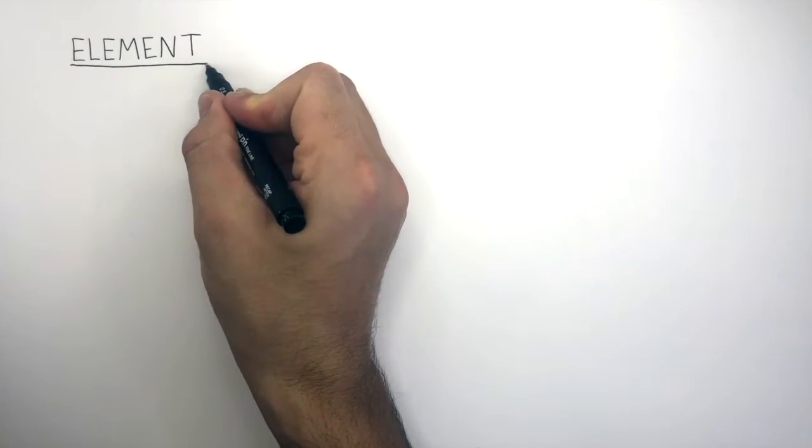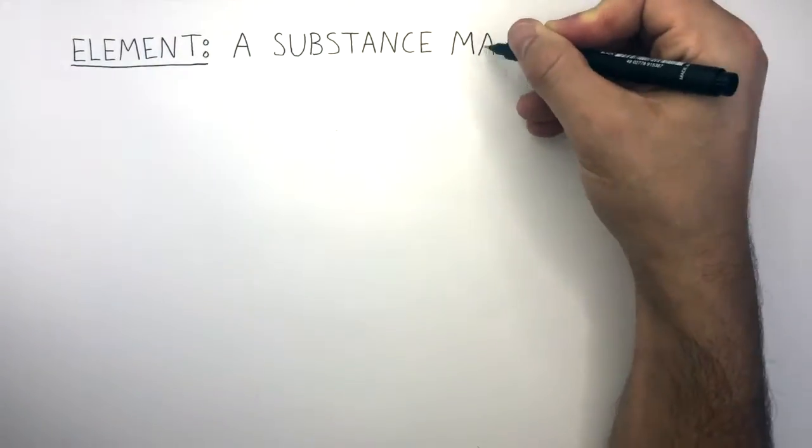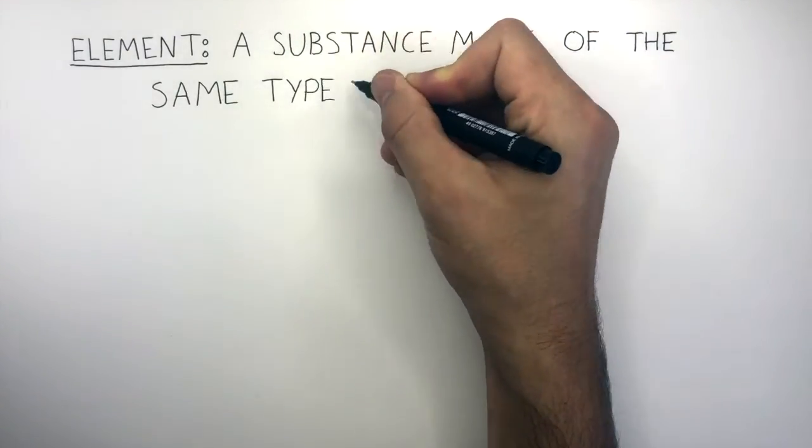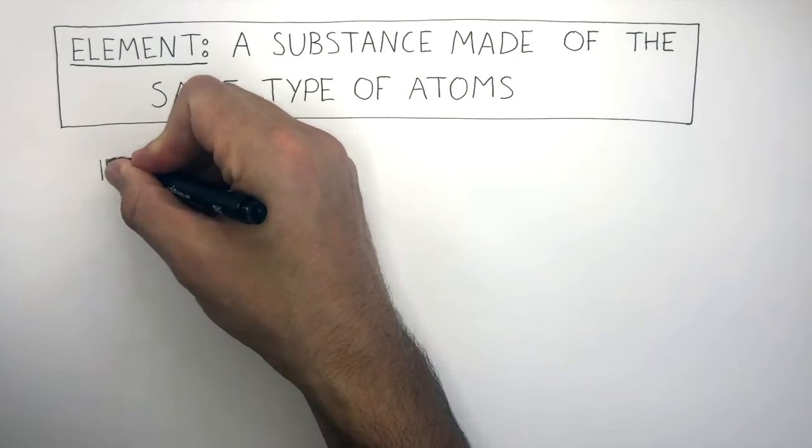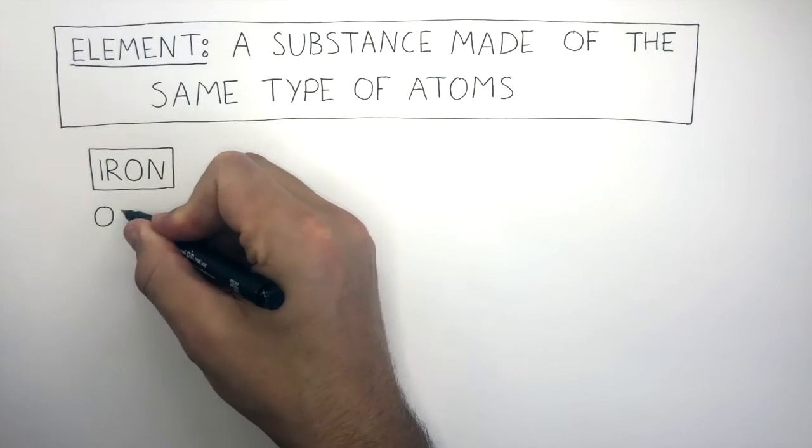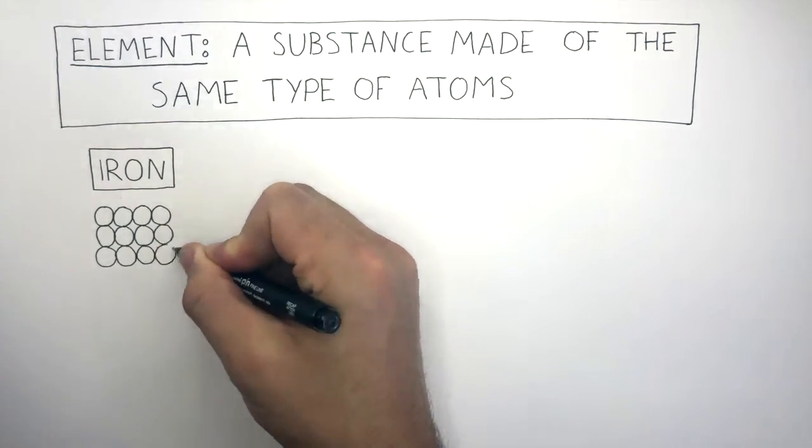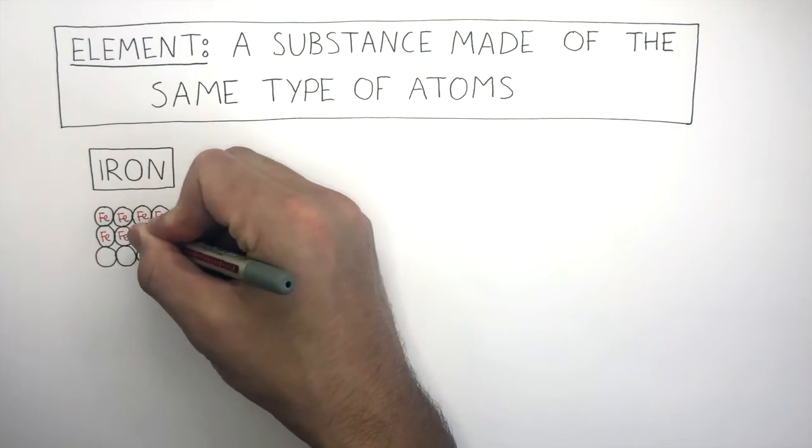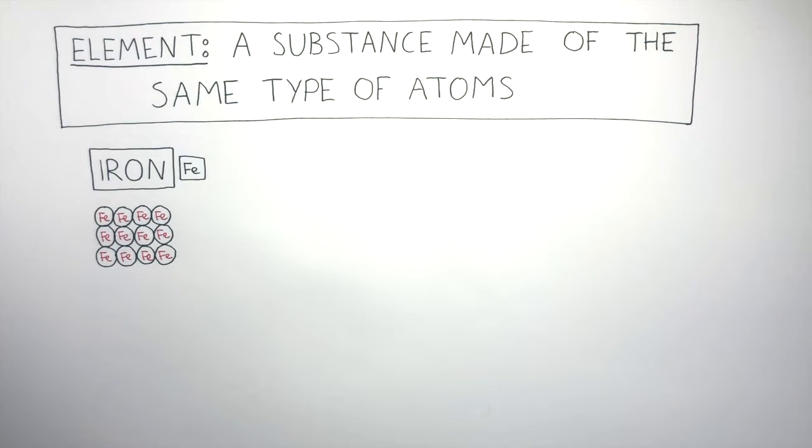An element can be defined as a substance made of the same type of atoms. Iron is an element found in the periodic table. Here I'm drawing a particle diagram where the symbol of iron is Fe. And this particle diagram shows how in a sample of iron, this particle diagram is the same, therefore this is an element.